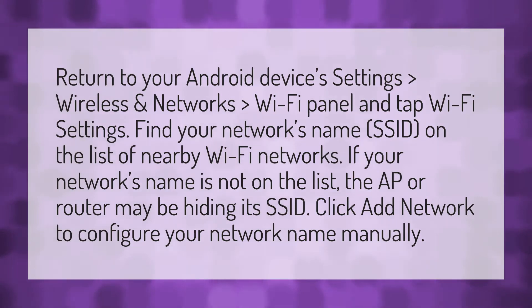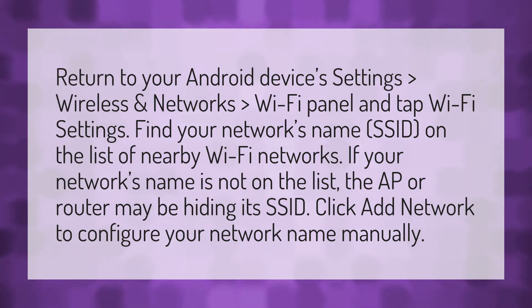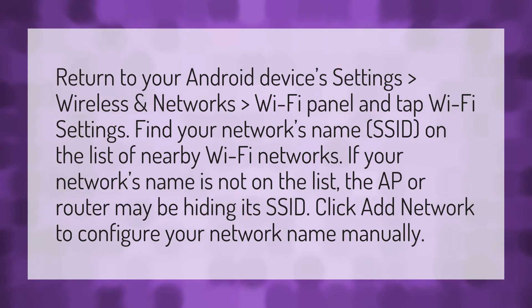Return to your Android device's Settings, then Wireless and Networks, then the Wi-Fi panel, and tap Wi-Fi settings. Find your network's name (SSID) on the list of nearby Wi-Fi networks.